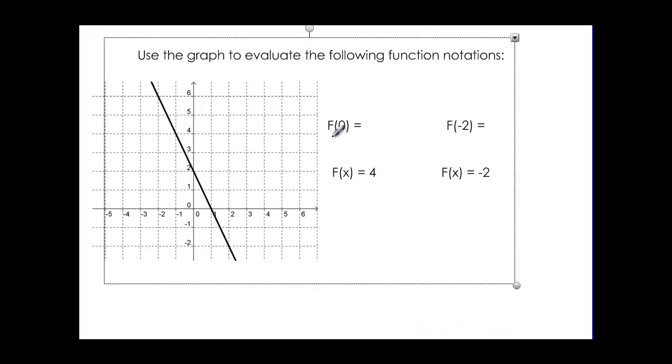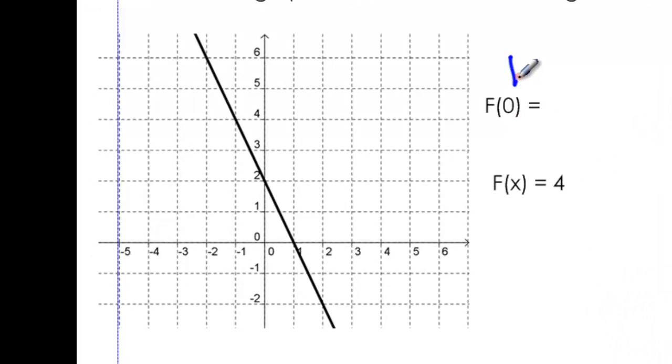Now let's try looking at a graph and see if we can look at our function notation. The key thing is to remember, is the number they give me an x or is it a y? Inside the parentheses, that's an x. And I'm trying to find the y value. So f(0) means that x is 0. So I come to the origin and I look to see where that is on my graph. When x is 0, y is 2.